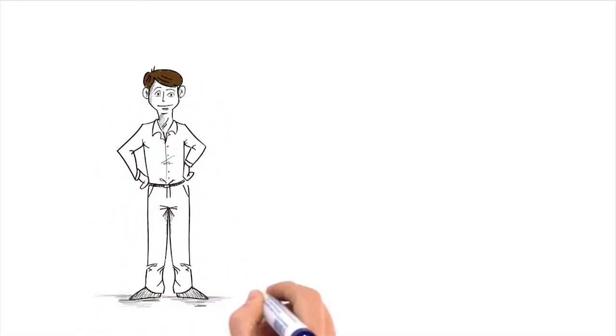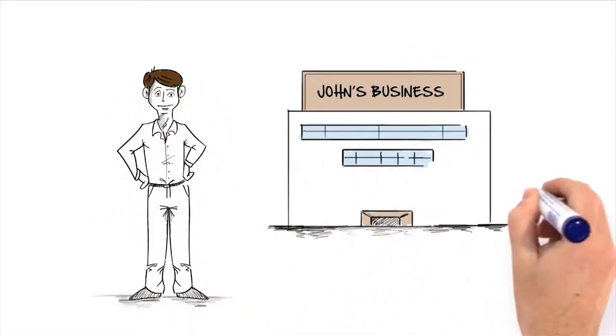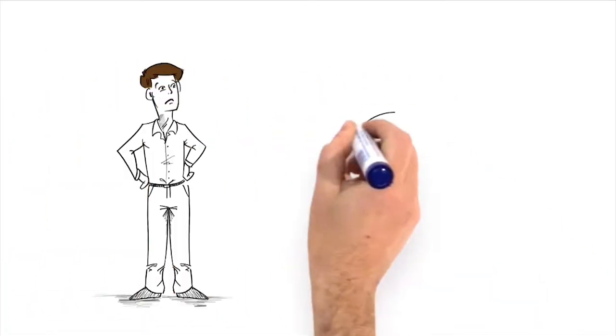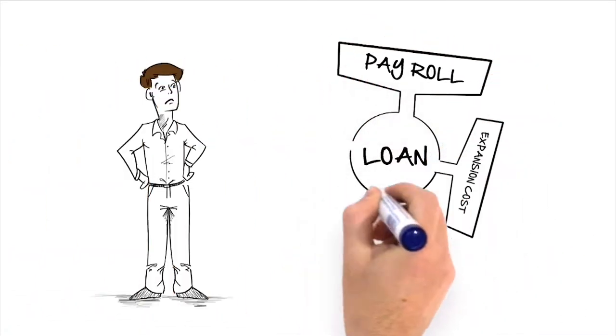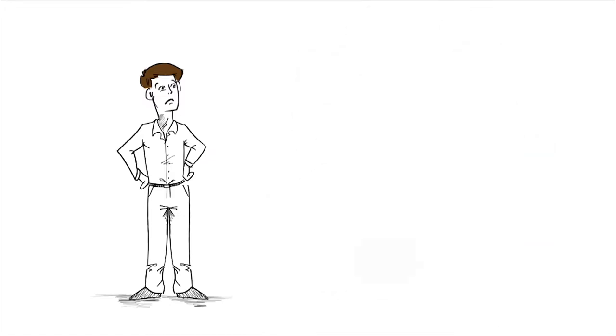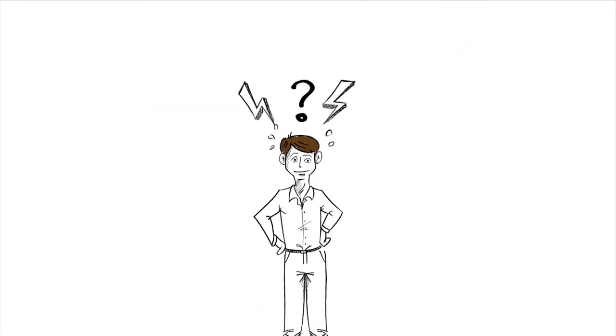Meet John. John is an entrepreneur owning a small business. John recently got the idea to expand his small business. Unfortunately, John has terrible credit and the bank refused him a business loan. John was devastated.